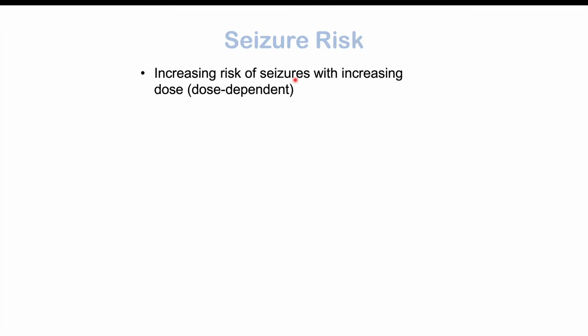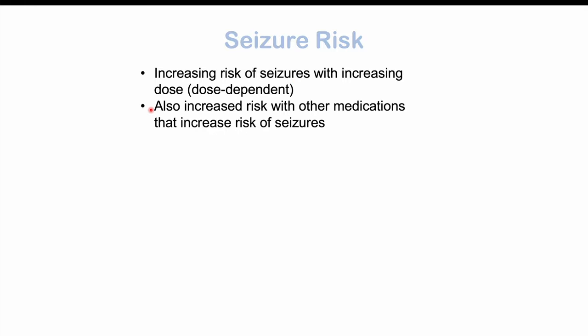Some very important risks to discuss are seizure risk. This medication can increase the risk of seizures with increasing doses — it's a dose-dependent effect. The higher the dose of Wellbutrin, the higher the likelihood of having seizures. It also increases seizure risk if you're on other medications that also raise seizure risk, and these effects can be additive. Generally speaking, the risk of seizures is going to be low — around 0.4 percent — but it is higher at higher doses.